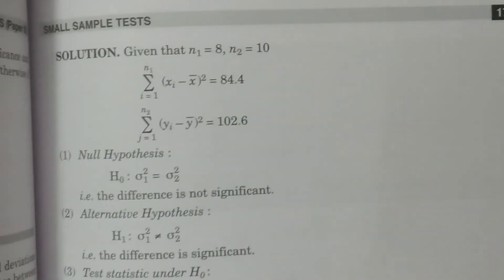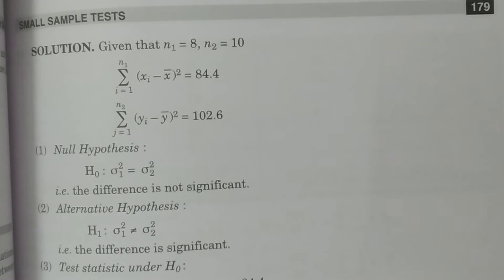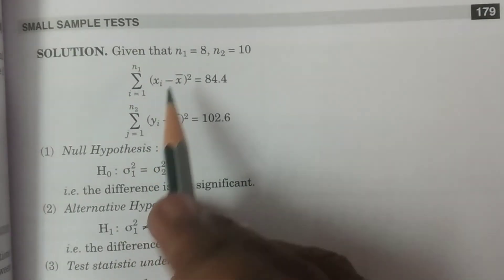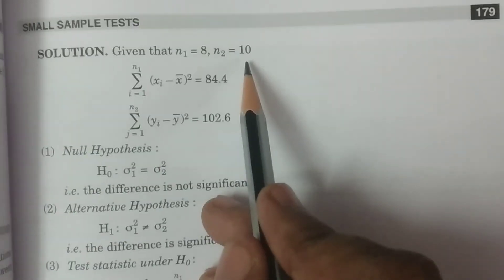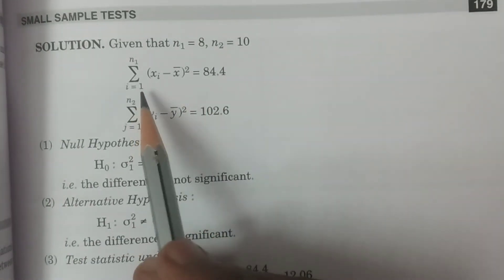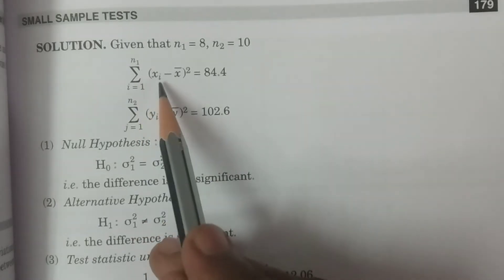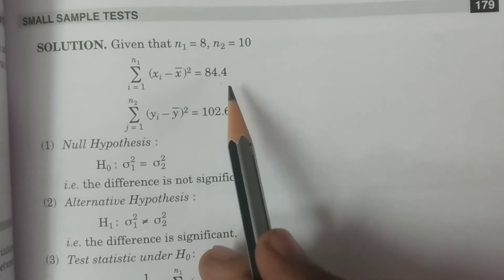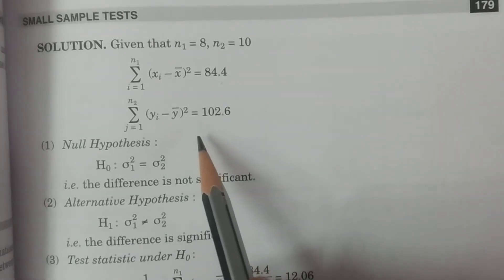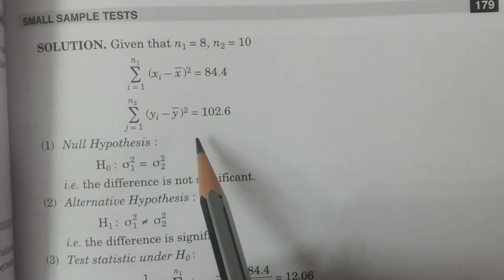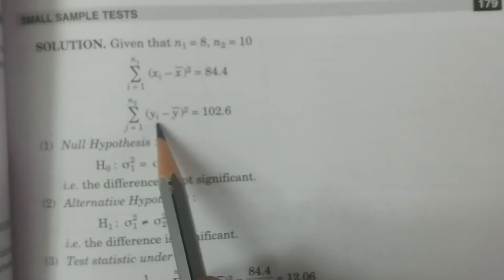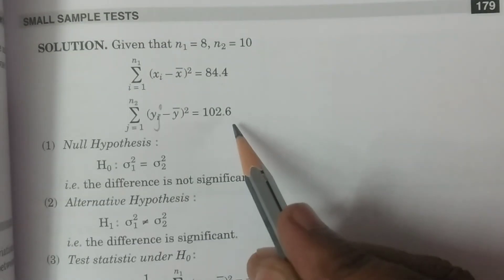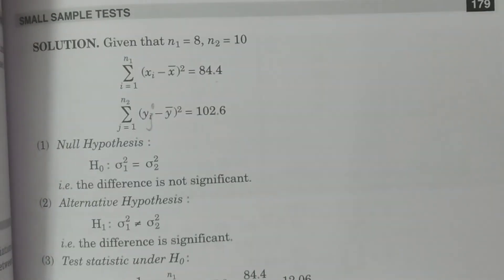Now observe the data given. Given that n1 is equal to 8 and n2 is equal to 10. The summation from i=1 to n1 of (xi minus x̄) whole square is equal to 84.4. For the other sample of 10 observations, summation from j=1 to n2 of (yj minus ȳ) whole square is equal to 102.6. These are the two values given.